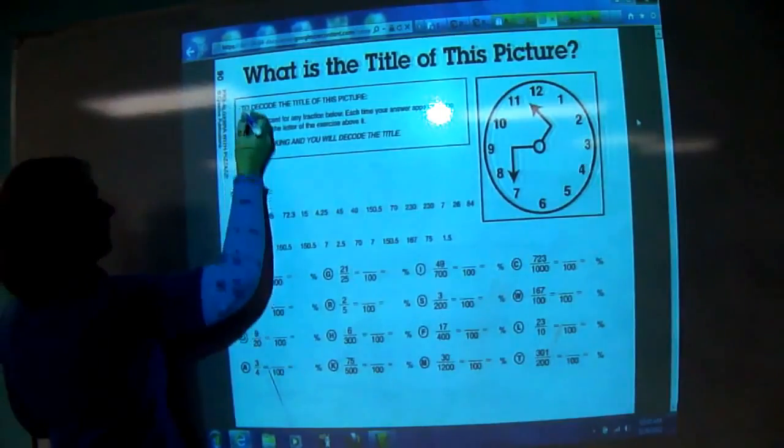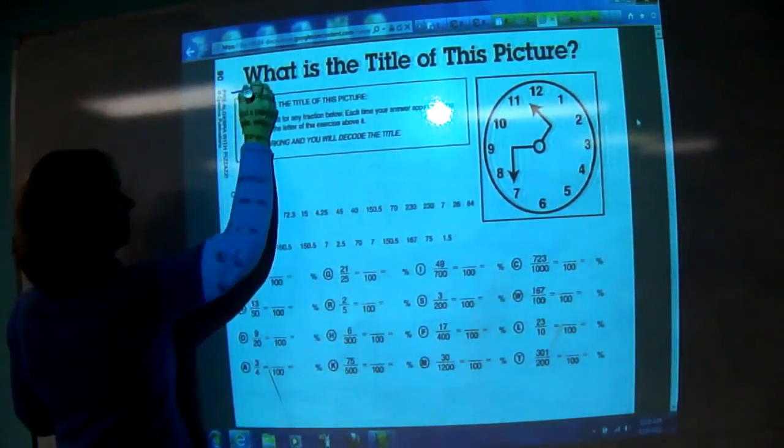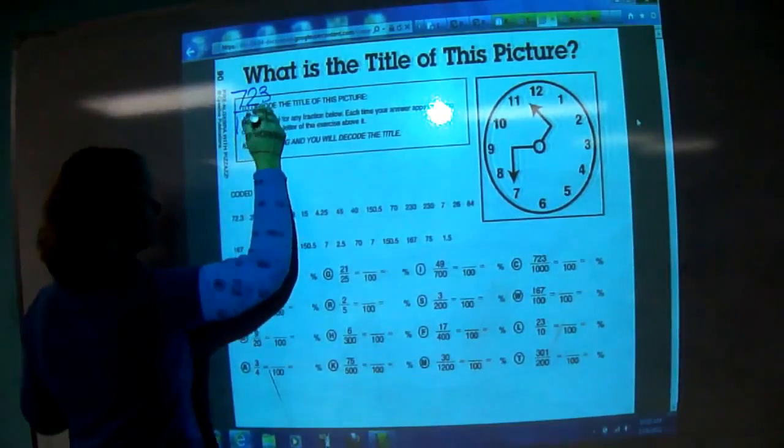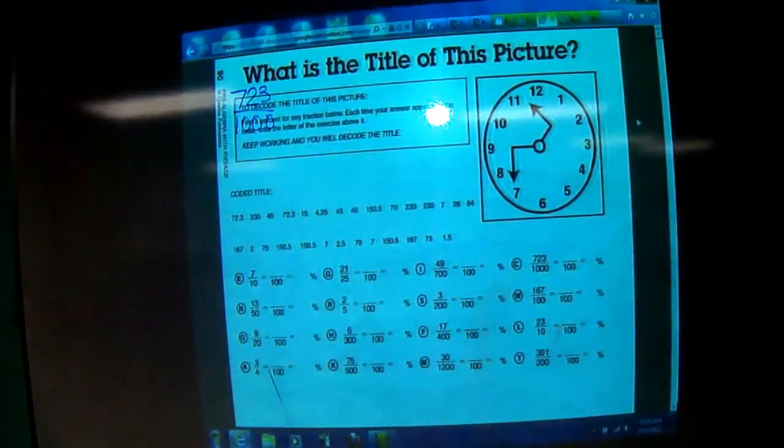723 is to 1,000, so I'm going to write it up here. 723 is to 1,000. Because I'm going to switch over to Cornell Notepaper.